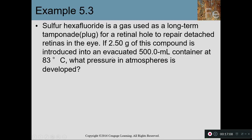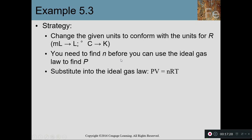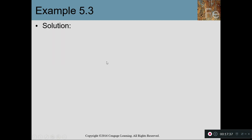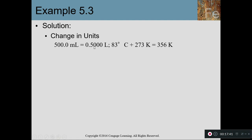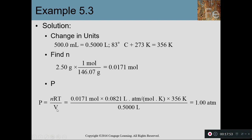One more example: sulfur hexafluoride (SF₆) is used as a long-term plug to repair a detached retina. If I have 1.50 grams of SF₆ in a container at a certain temperature, what is the pressure in atmospheres? Convert milliliters to liters, Celsius to kelvins, and grams to moles. Since the answer is requested in atmospheres, use R = 0.0821 in P = NRT/V. The result is a pressure of 1 atmosphere.